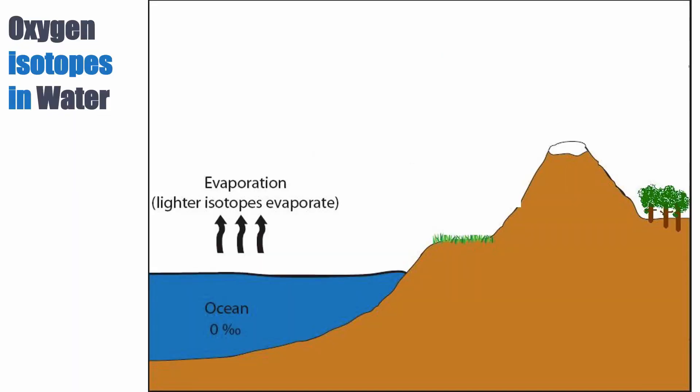Fractionation means that you will not have the same isotopic ratio in your product as in your initial material, because the physical-chemical processes that take place favor one of the two isotopes. Typically, when you have evaporation, you more easily evaporate the lighter H₂O molecule, so you preferentially concentrate molecules with more O16 in the water vapor. The clouds will end up with a δO18 of minus 10 per mil — depleted compared to the ocean value of zero SMOW.